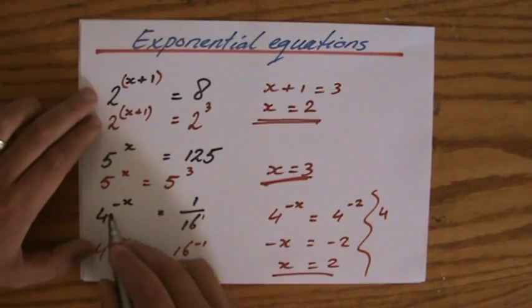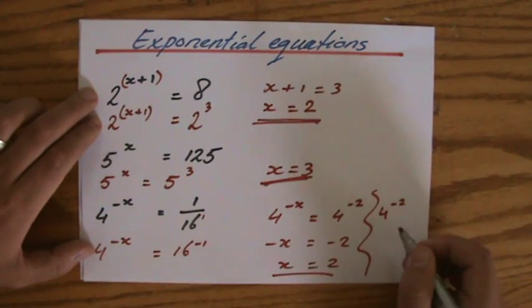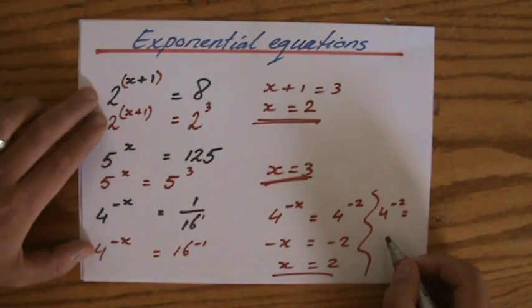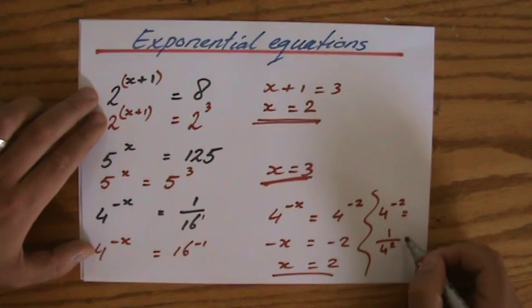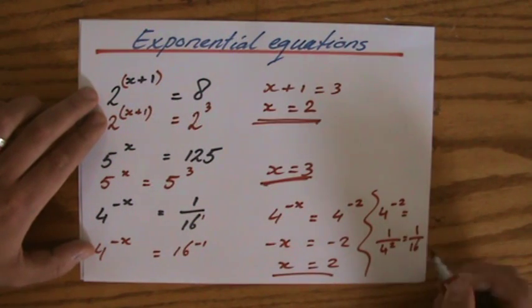So I substitute my answer for x. 4 to the power minus 2. That is the same as 1 over 4 to the power 2, which is 1 over 16.